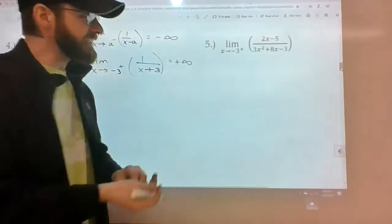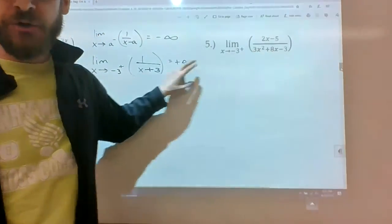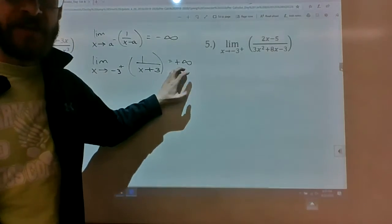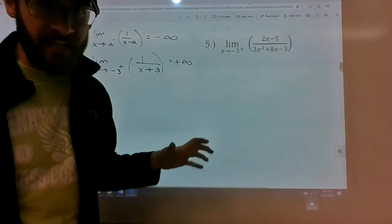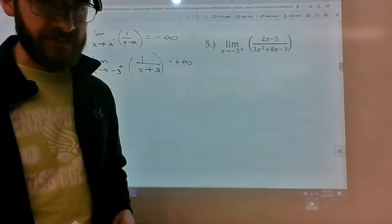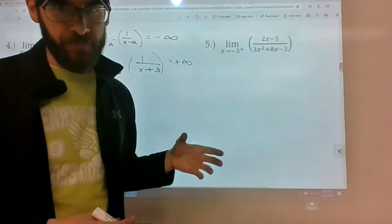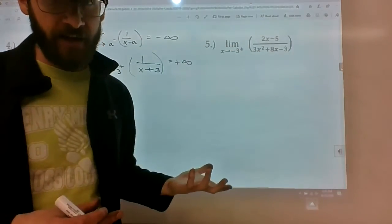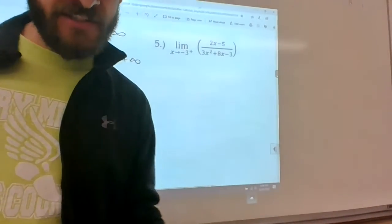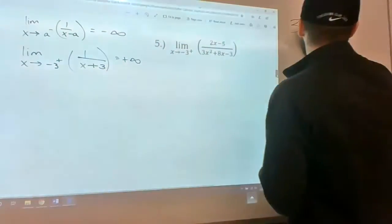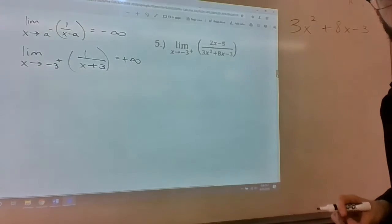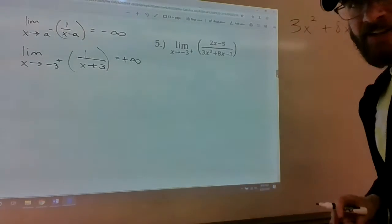If we can take this function and create one over x plus three, we can take an infinite value and multiply it by a finite value, which ultimately will get us to our final answer. So the question is, can we rewrite the bottom where x plus three is one of the factors? Can I, off to the side,